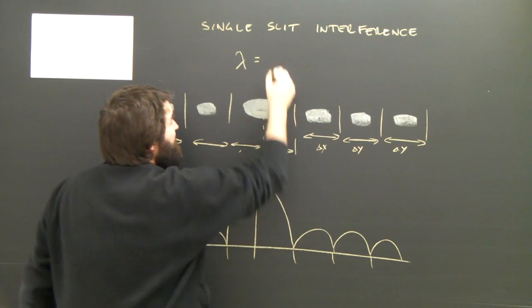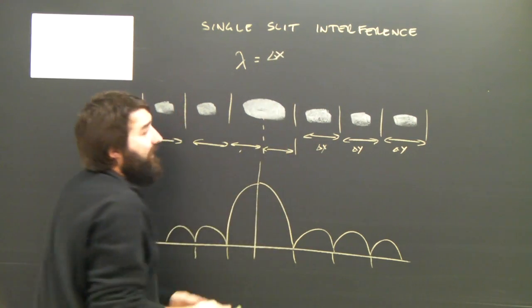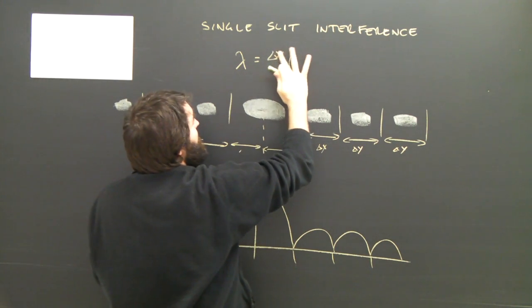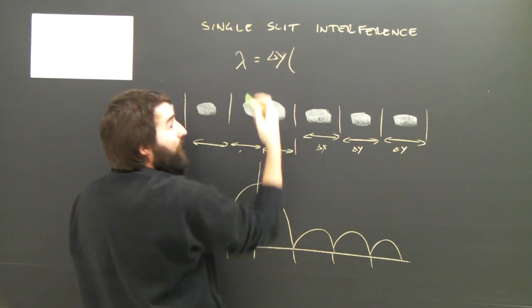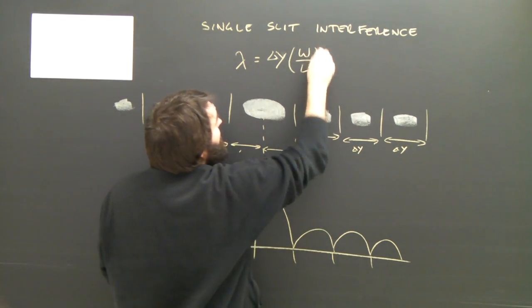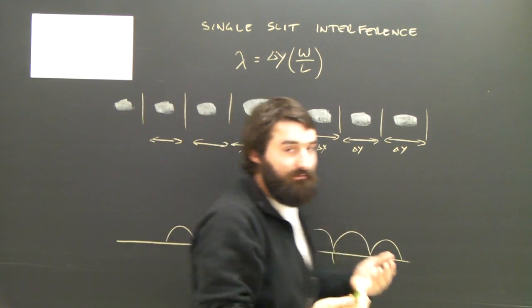The formula is essentially exactly the same, except instead of delta x, it's delta y. We don't have d between two slits, we have the width of a single slit. So it's delta y equals lambda L over w. Instead of d, we have w, and it's exactly the same.